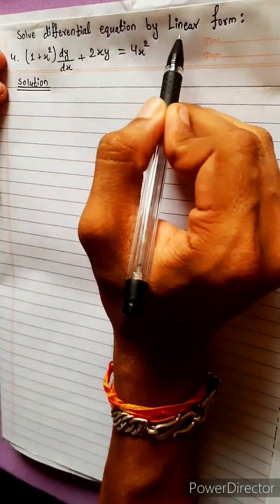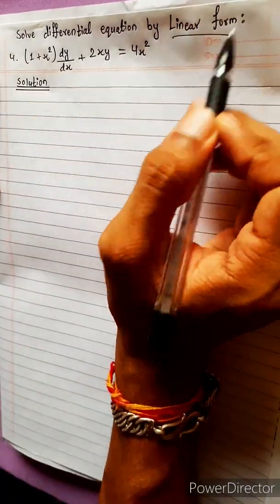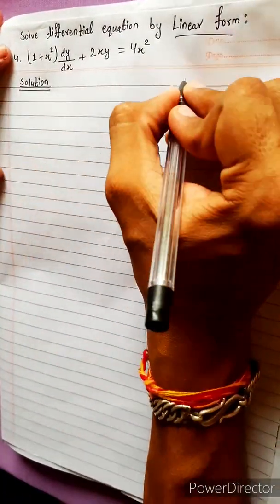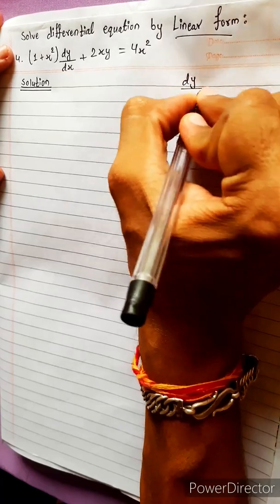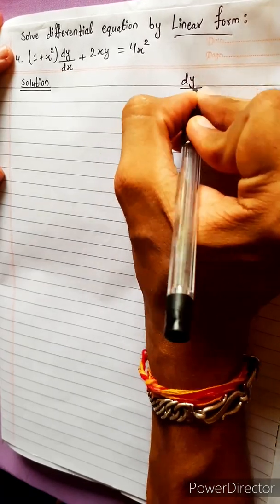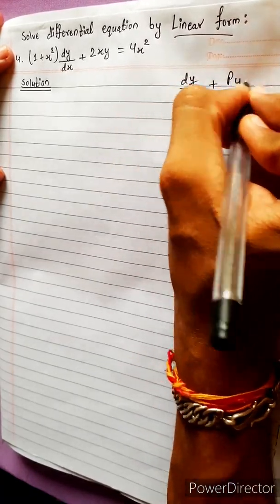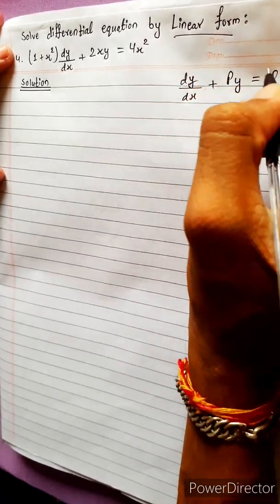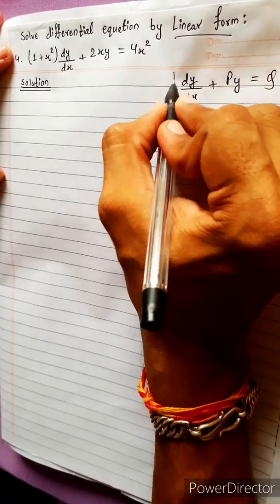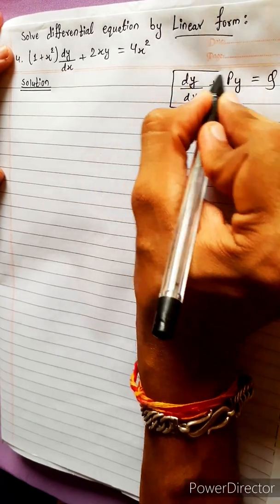The same thing — differential equation in linear form. The linear form is dy/dx + Py = Q. This is the standard formula.